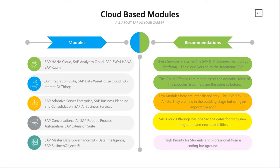Other modules like SAP Adaptive Server Enterprise, SAP Business Planning and Consolidation, and SAP AI Business Services are still getting to light, and in one year or so, this would be a top niche in the cloud platform. In addition to that, you have SAP Conversational AI, SAP Robotic Process Automation, and SAP Extension Suite. These are still in the R&D phase — an actual version is out, but it doesn't have many properties associated with it yet, so you need to wait for the full version to come out.